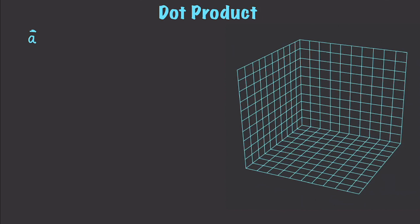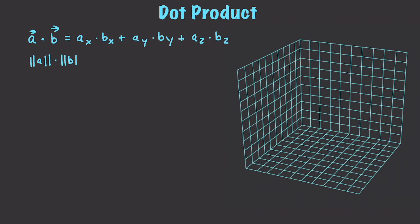I briefly talked about the dot product before. It provides a scalar that represents how much vectors point in the same direction. To calculate the dot product between two vectors in 3D, we take AX·BX + AY·BY + AZ·BZ. Likewise, this equals the magnitude of A times the magnitude of B times the cosine of the angle between them.